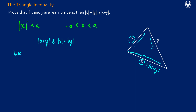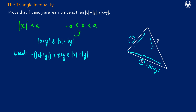Very specifically, using the definition above, what we want is: negative absolute value of x plus absolute value of y is less than or equal to x plus y, which is less than or equal to the absolute value of x plus the absolute value of y. This is what we want.